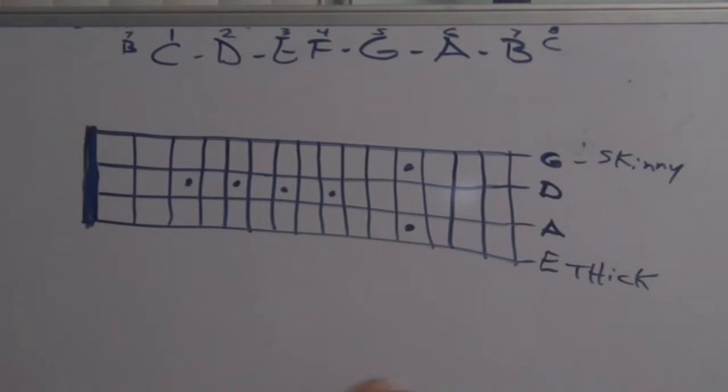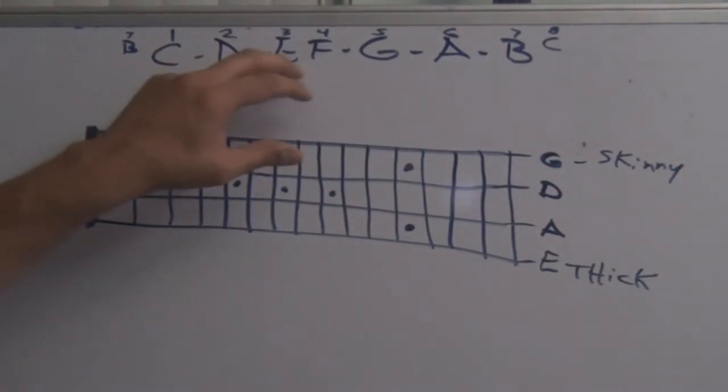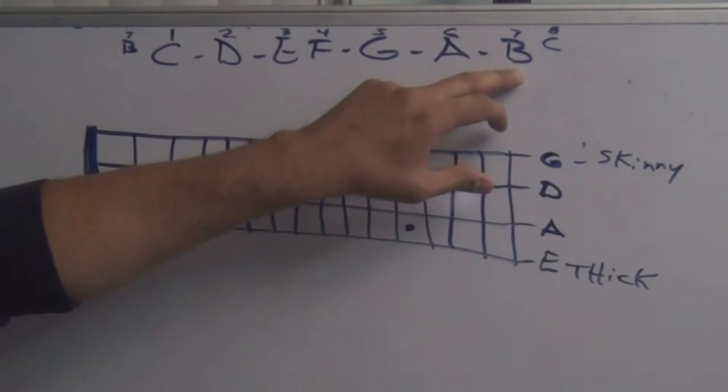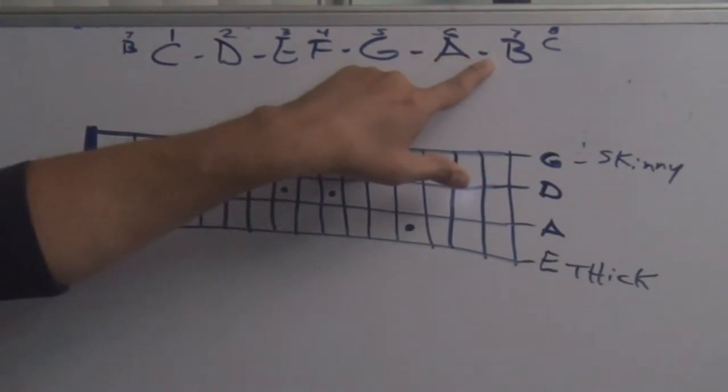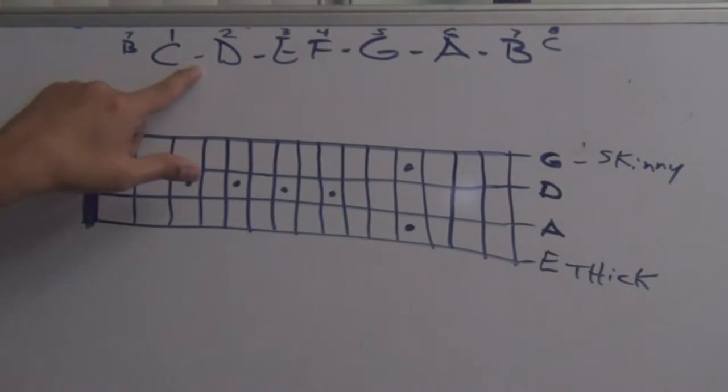Now here we go. We got a C scale, which is C, D, E, F, G, A, B. The lines, if you look at the piano, are the black keys. The lines, the division, are the black keys on the piano.